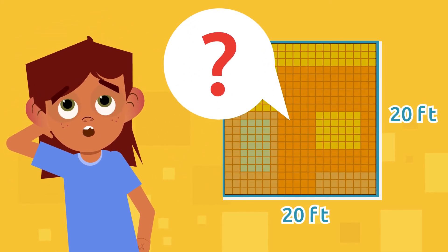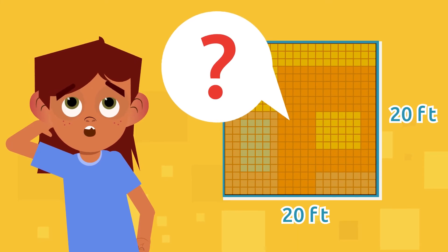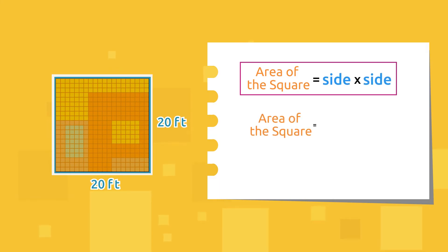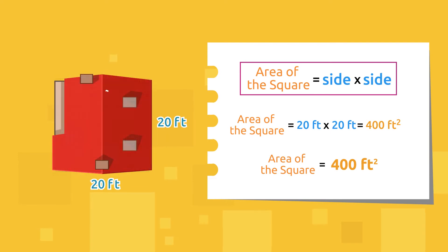To find out, we need to calculate the area of this square. Remember that we should multiply one side by the other. Let's see: 20 by 20 equals 400. Great! Patricia is going to build a 400 square foot house. It'll be huge!